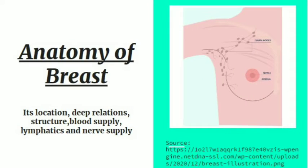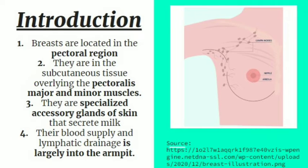In this video, we will study the anatomy of the breast, including the location of the breast, the organs beneath it, their relation with the breast, the structure of the breast, the blood supply including arterial and venous supply, the lymphatics and lymph nodes, and the nerve supply of the breast.